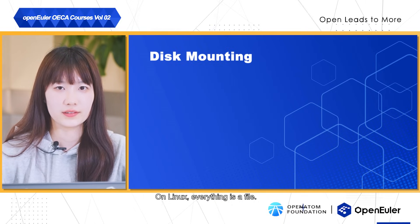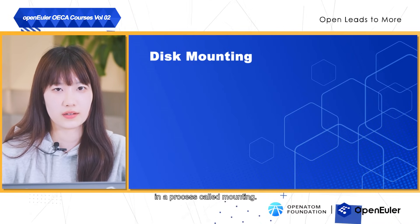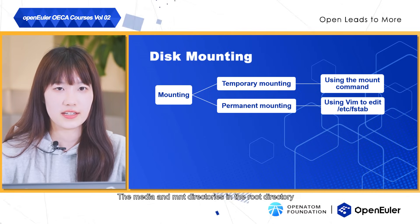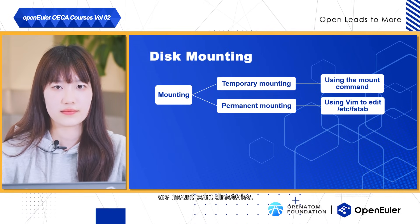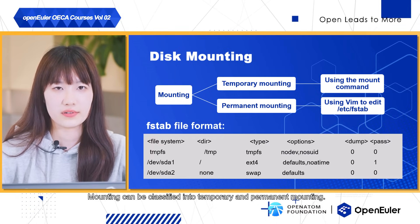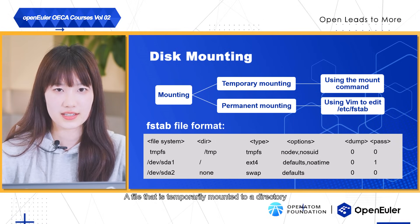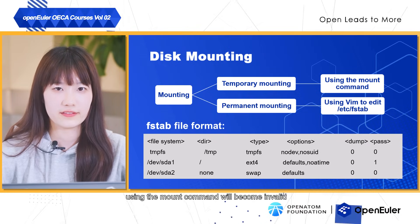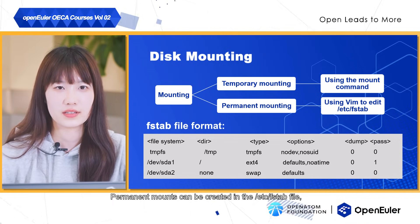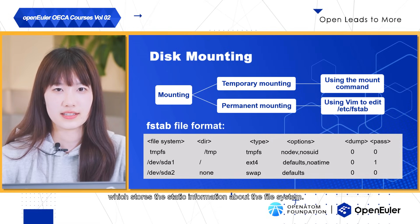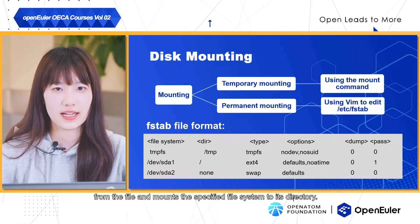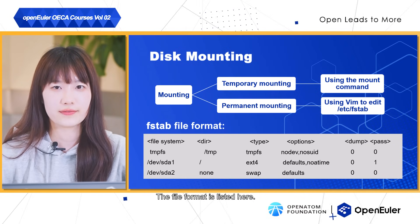On Linux, everything is a file. This requires connecting the disk and file in a process called mounting. A disk can be used only after it is formatted and mounted. The /media and /mnt directories in the root directory are mount point directories, though other directories can also be created as mount point directories. Mounting can be classified into temporary and permanent mounting. A file that is temporarily mounted to a directory using the mount command will become invalid after the system restarts, while permanent mounting will automatically mount the file upon system startup by reading information from the configuration file and mounting the specified file system to its directory. This file format is listed here.